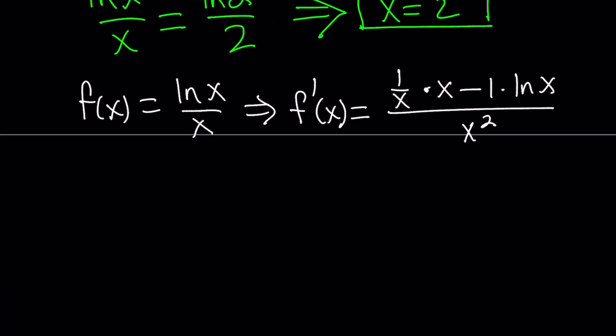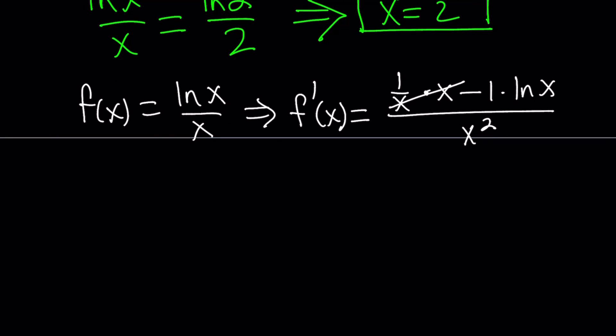Easy, right? Okay. Now, x cancels out, leaving us with f prime of x equals 1 minus ln x over x squared.